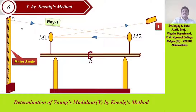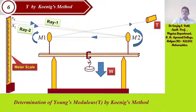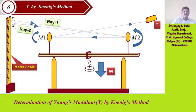Initially no weight is applied and the reading is x0. When weight 1 is applied, the ray shifts and the new division is x1 on the meter scale. Mirror M2 bends slightly and mirror M1 also shows bending action. The division shifts from x0 to x1, as shown by ray 2 in the diagram.